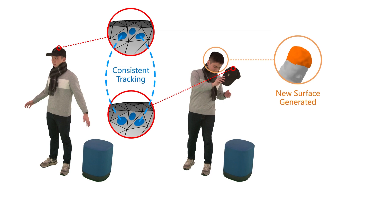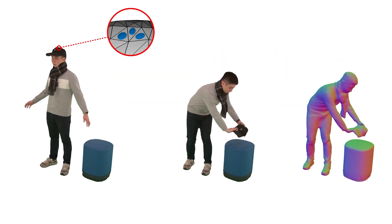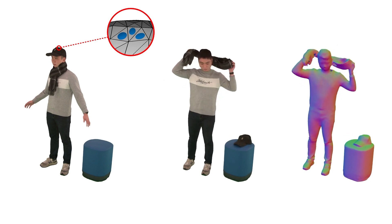When new geometry appears, like the hair region, Gaustar generates new surfaces accordingly. Highly dynamic objects like the scarf can also be handled well.